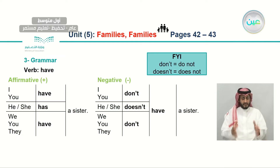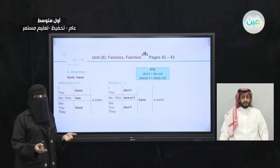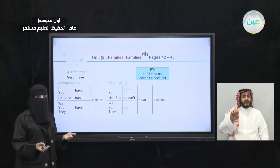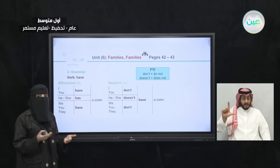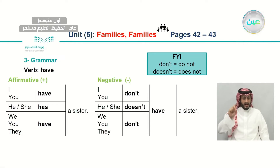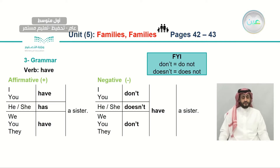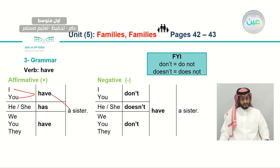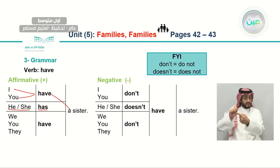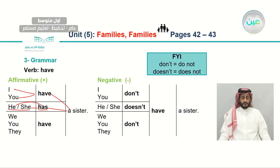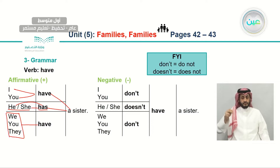Let's start with the verb 'have.' Do you have your book? That means: do you have it now, at this moment? Your teacher will probably ask you this question. Let's look at the affirmative form. With subject pronouns I and you, we use 'have': I have, you have. For example, I have a sister, you have a sister. With he and she, we use 'has': he has a sister, she has a sister. With we, you, and they for plural, we also use 'have': we have a sister, you have a sister, they have a sister.